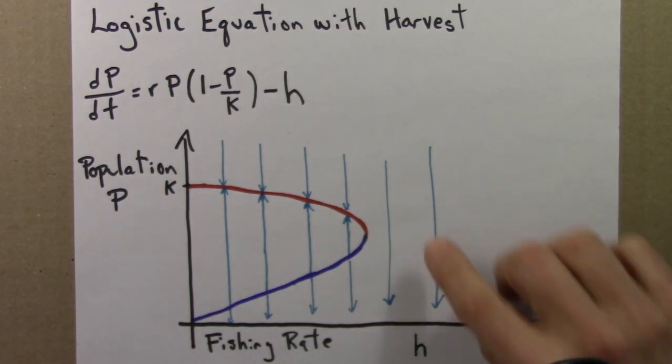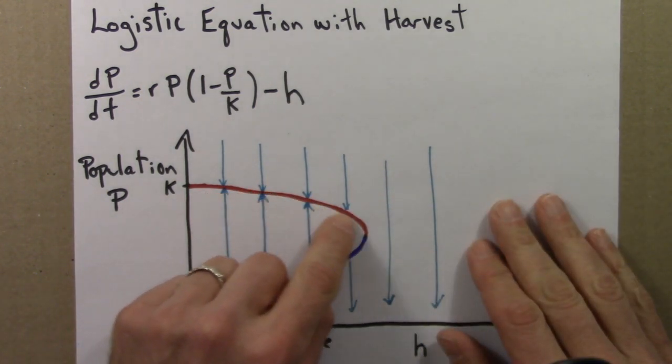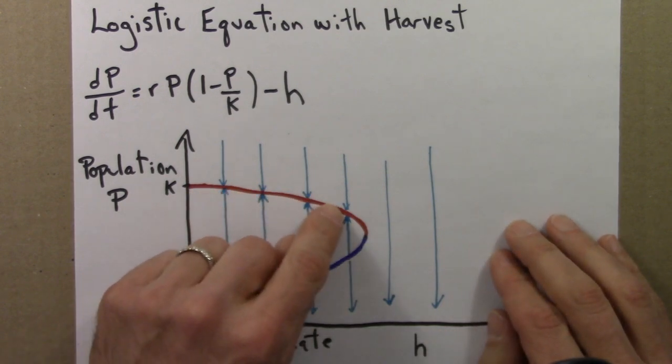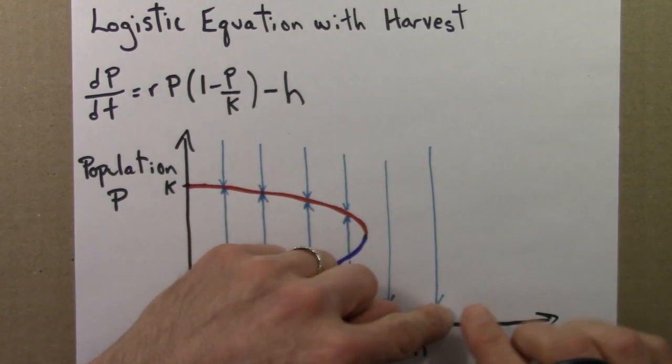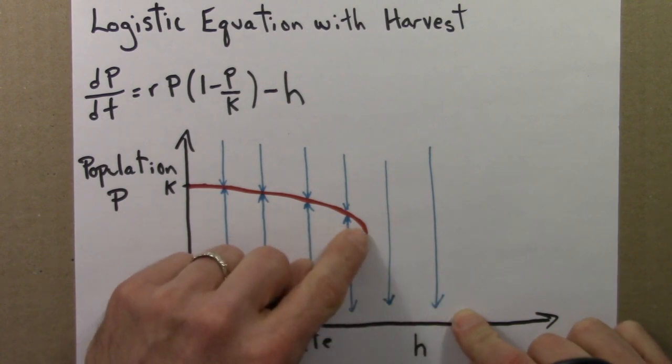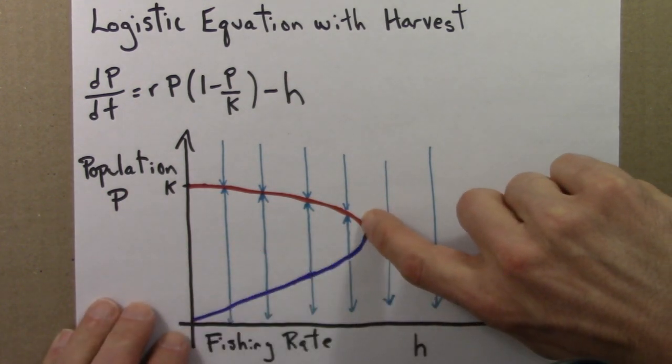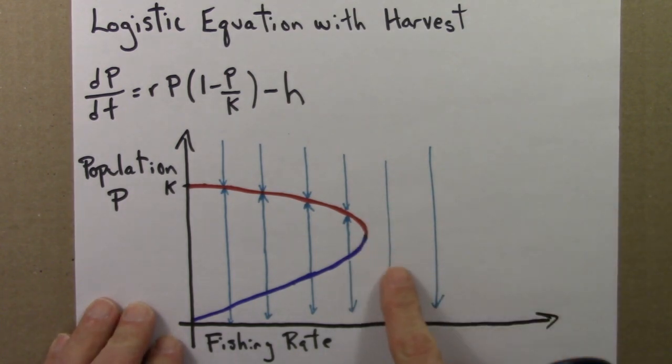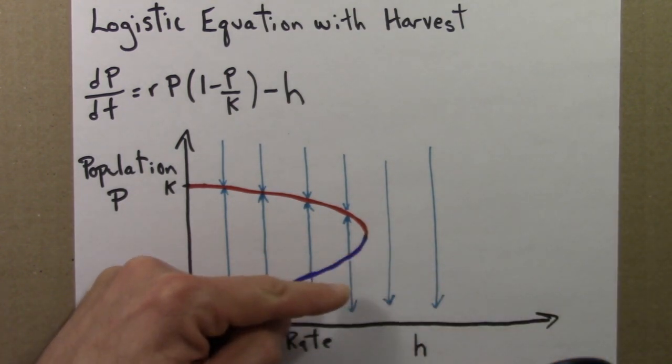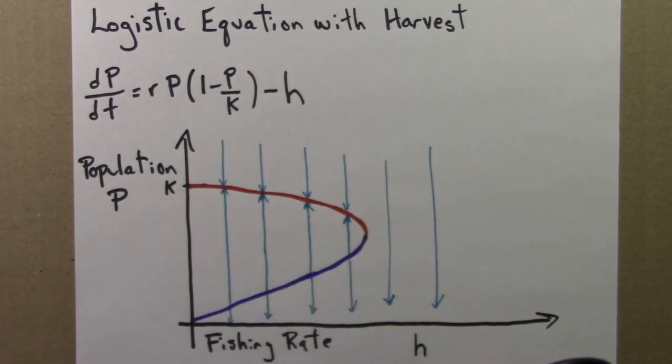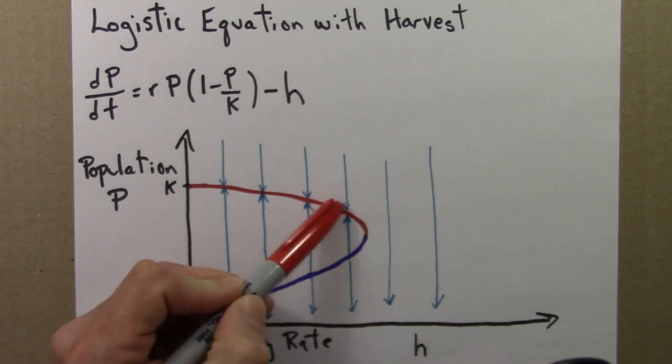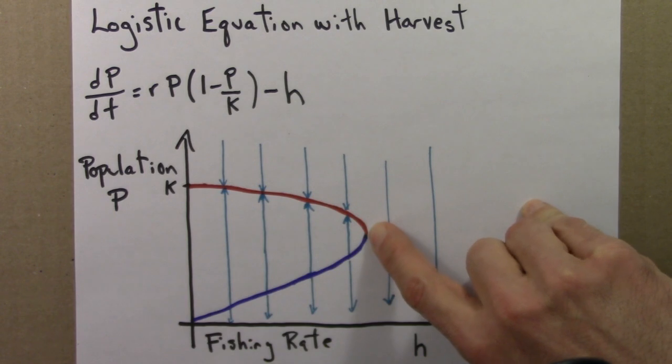But the thing to note is, the steady state, this red value, you might think that the equilibrium value would approach h smoothly, but instead, it just sort of falls off a cliff. You can have a stable equilibrium here, but you can't have any stable equilibria for a population less than this. So we might think that this red curve should kind of go down and touch this, but the red curve just blinks out of existence right here.